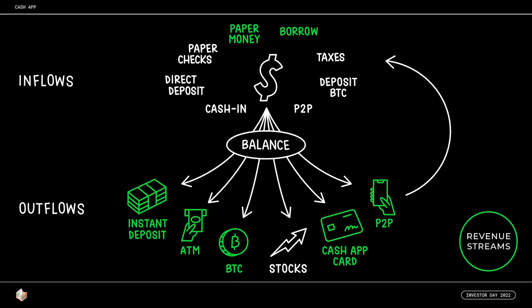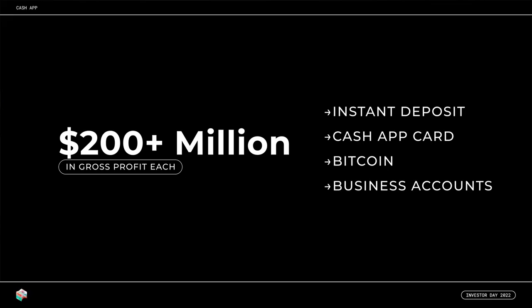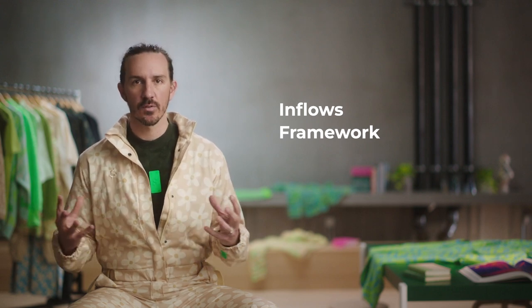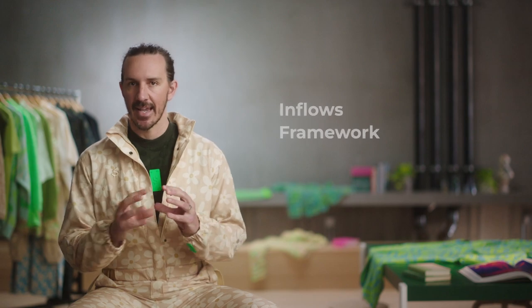As money flows through the ecosystem, we selectively charge fees that are intended to be commensurate with the overall value we provide our customers. Our revenue streams are diversified across seven main channels, with the largest four monetization channels being instant deposit, interchange from Cash App card, spreads on Bitcoin trading, and business transactions coming through the P2P network. Each of our four largest monetization channels made up more than $200 million in gross profit each during 2021. The amount of money pulled into Cash App is directly correlated to the performance of our business — therefore, we instrument and operate the business through a simple equation that we call the inflows framework.